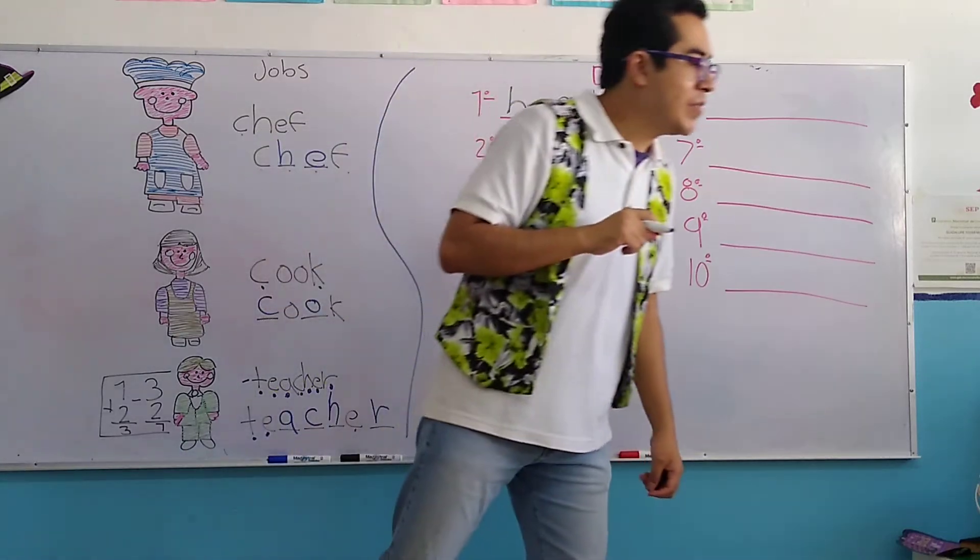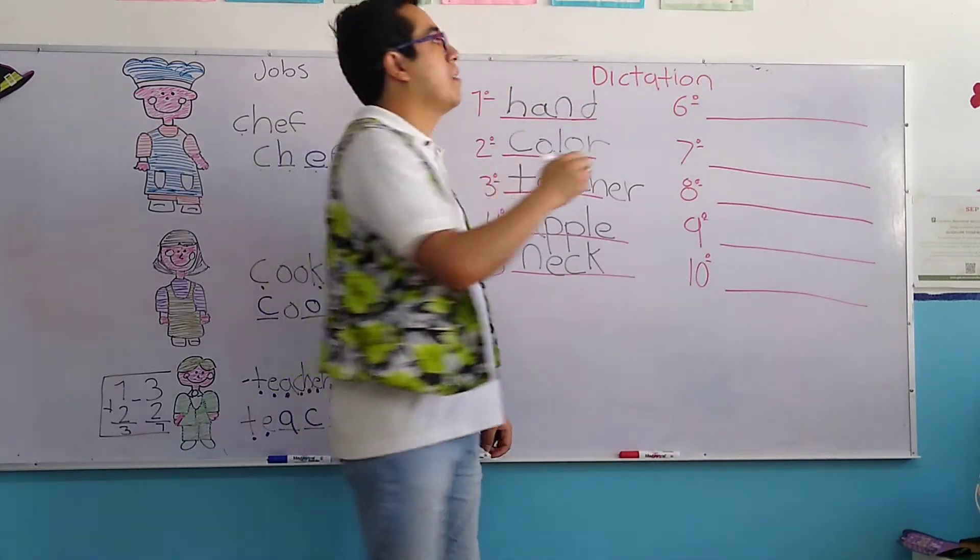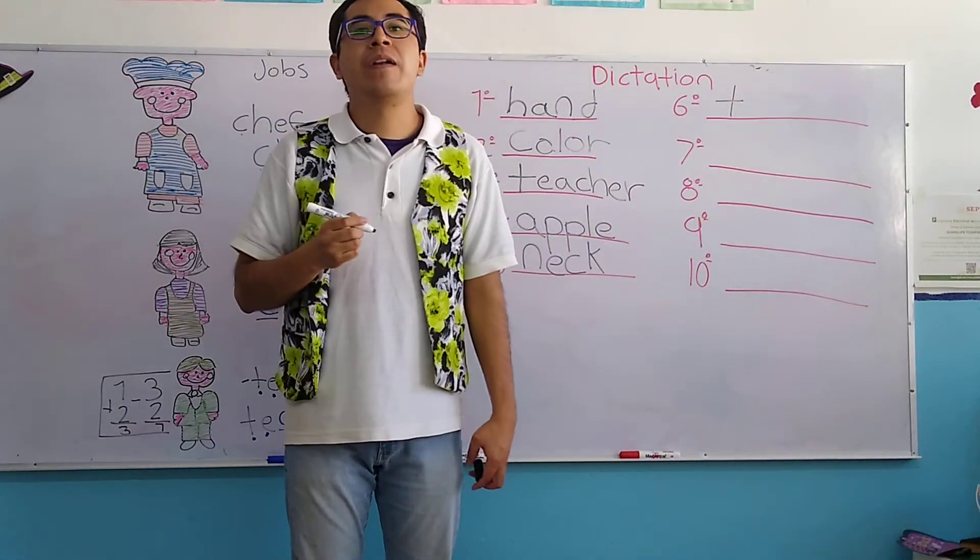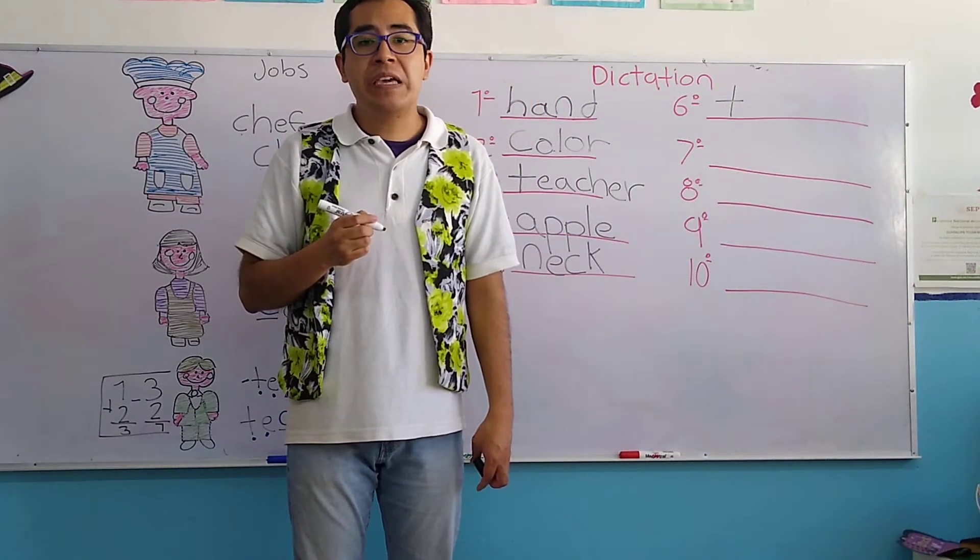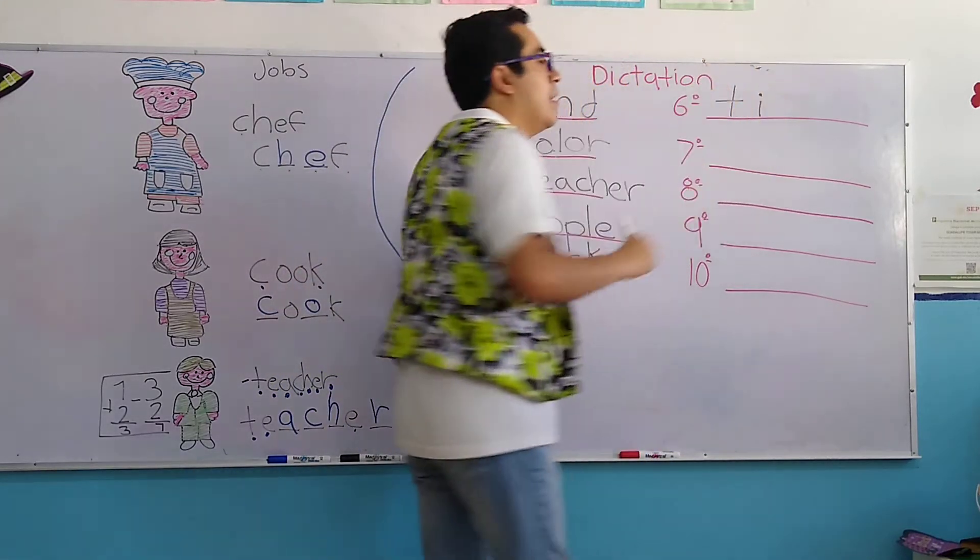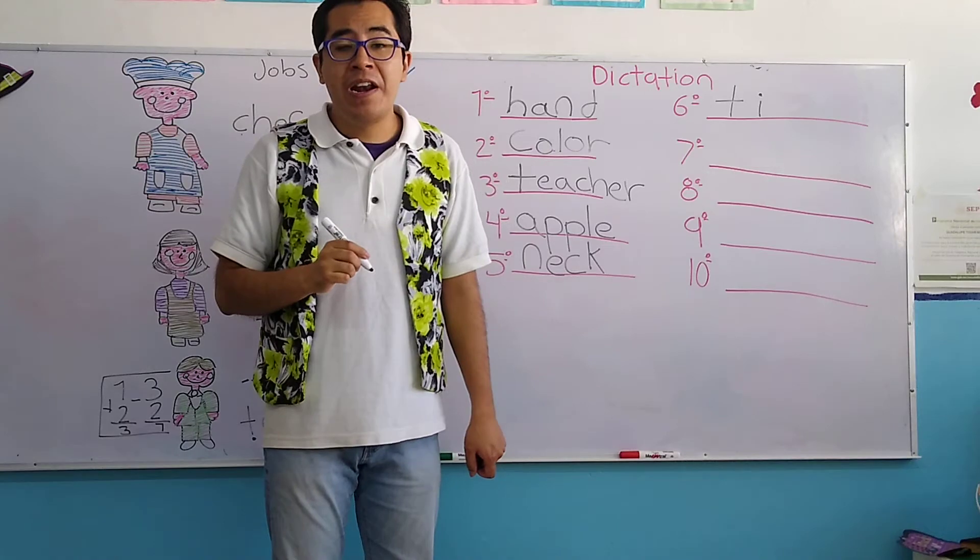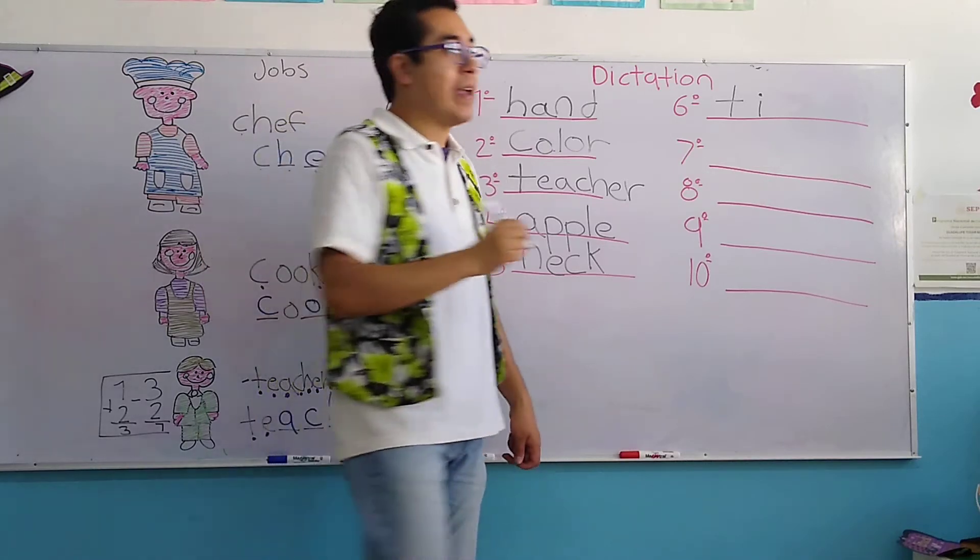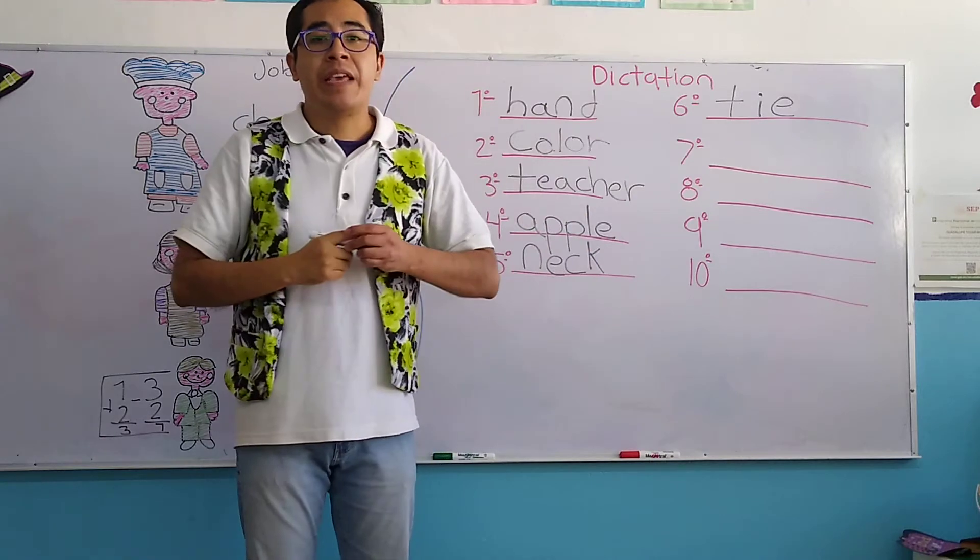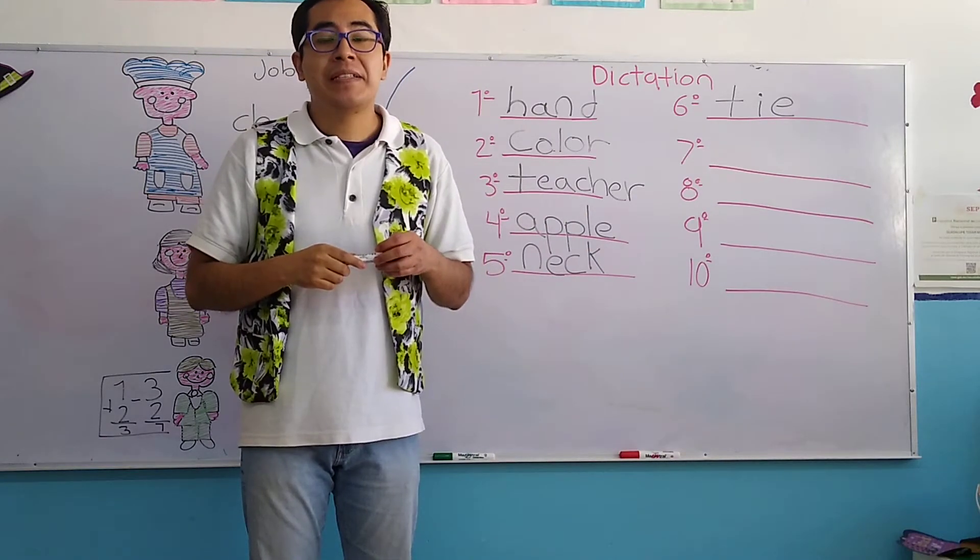The first letter is letter T of Train of Tito. Letter I of Indian. Letter E of Elephant of Enrique. And the sixth word, it says tie.